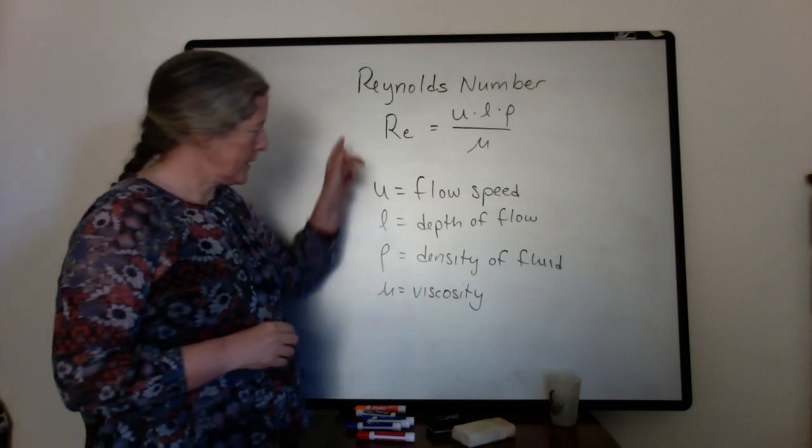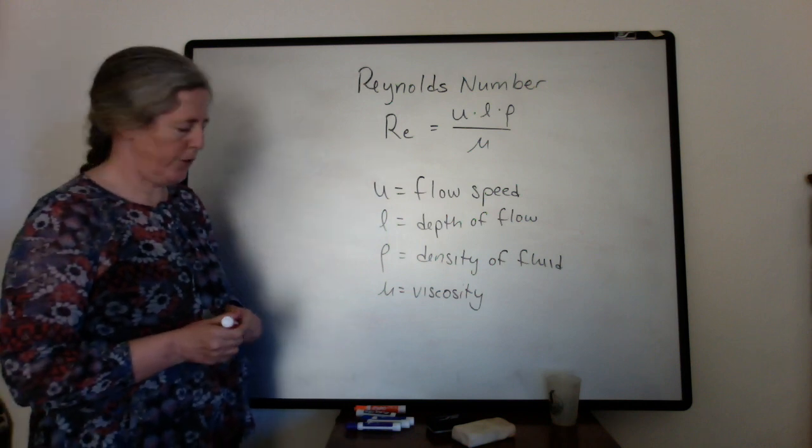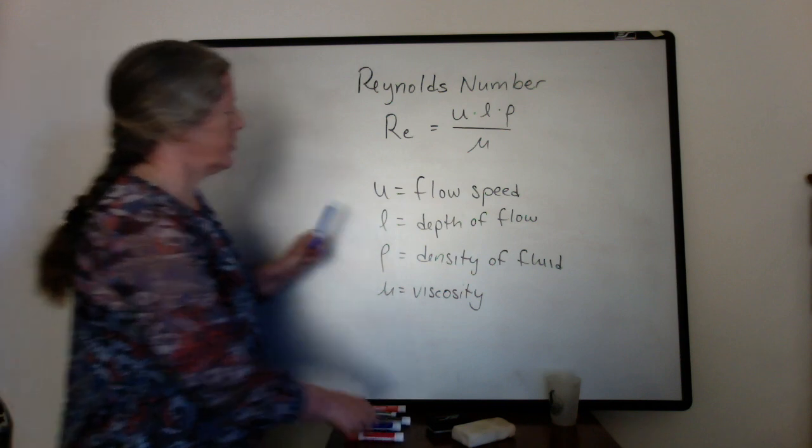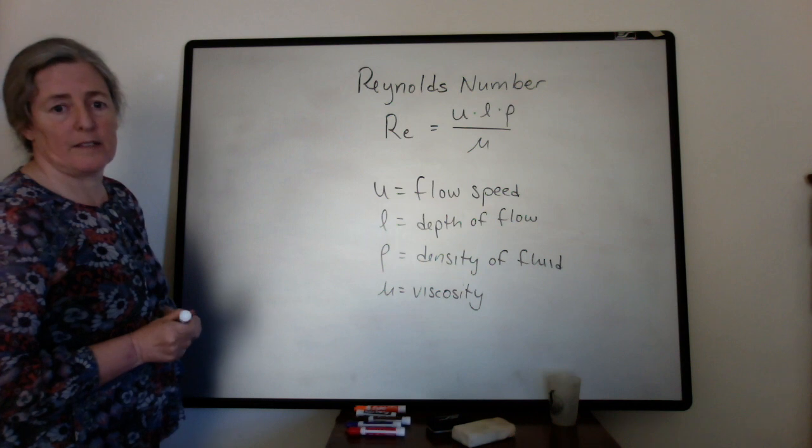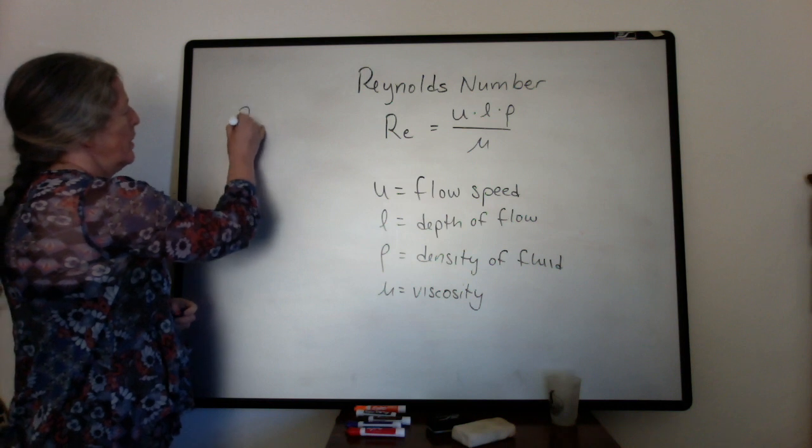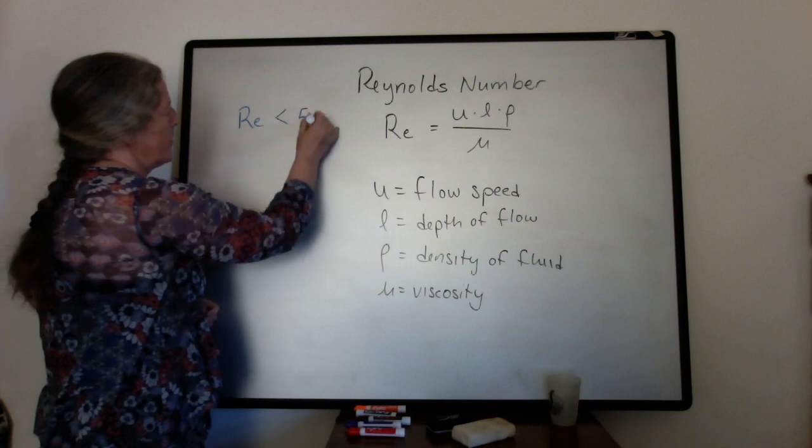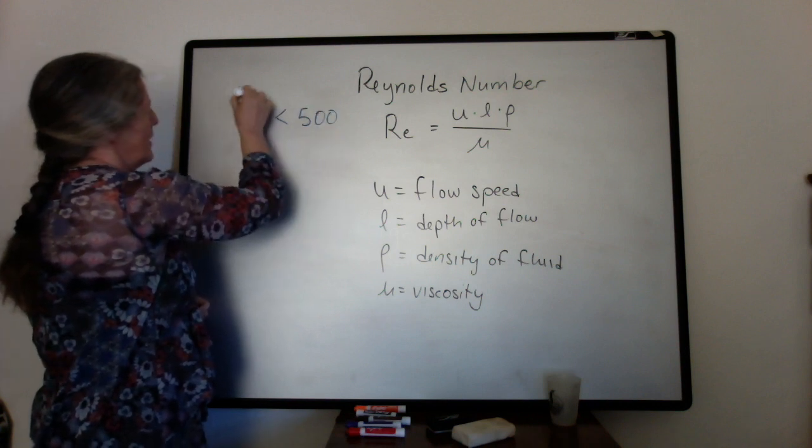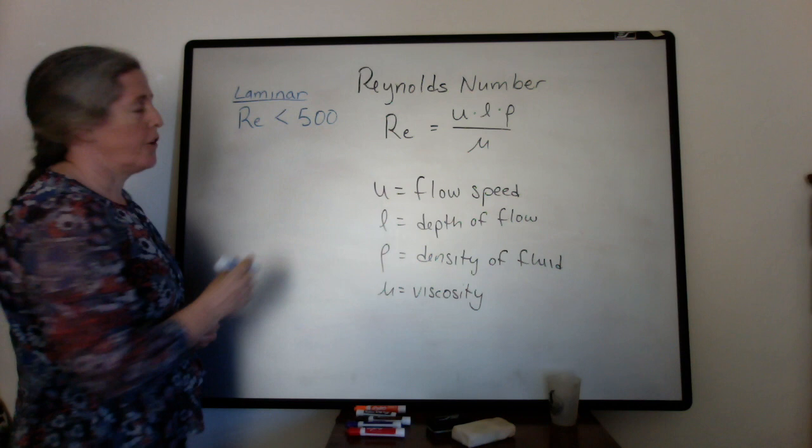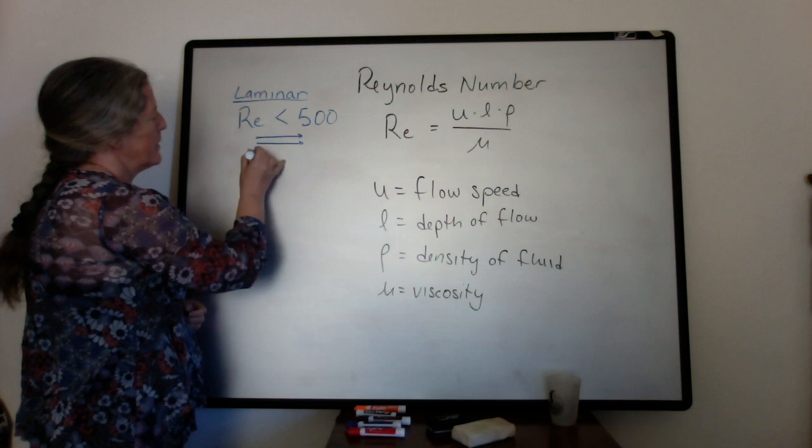So we can take this Reynolds number and measure it for a given flow, and then we can also interpret that in terms of whether a flow is laminar, transitional, or turbulent. The boundaries we're going to use are for an open channel flow. If the Reynolds number is less than 500, we say it's laminar. And as you know from the last video, that means that the particles are mostly moving parallel to each other.